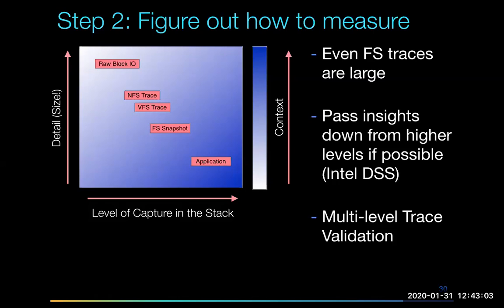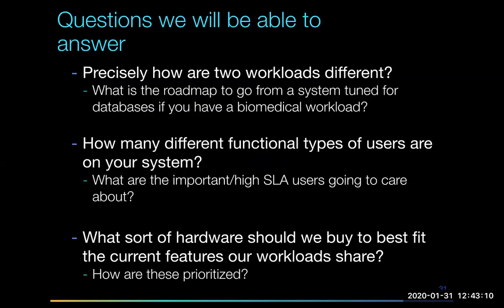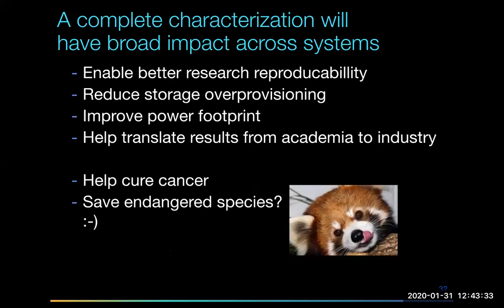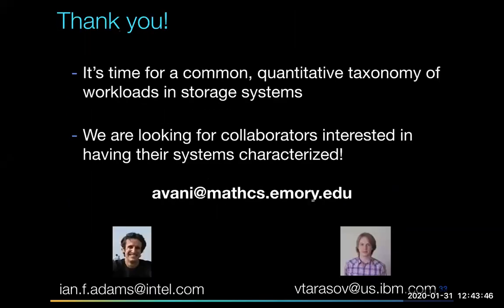We're using Intel DSS to propagate information on the stack right now, and ideally we can do better. Our core question is: how are two workloads meaningfully different? We want to separate out functional types and ultimately be able to tell you what hardware to buy based on the workload you have. That will improve power, caching, performance, and make all the things better. With that, I can take questions.